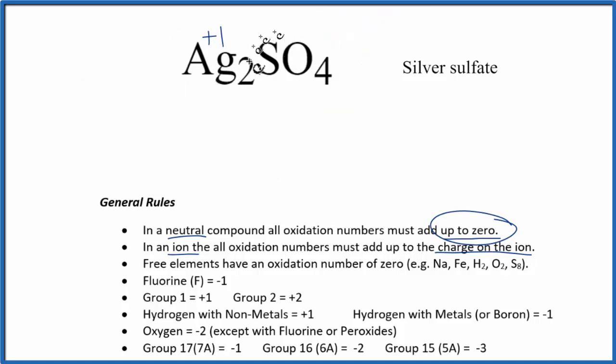So now we can try to figure the sulfur out here in Ag2SO4. So we don't know sulfur, let's call that X, but oxygen, that's always minus two, with just a few exceptions. So each one of these oxygen atoms, minus two. And all of this adds up to zero.